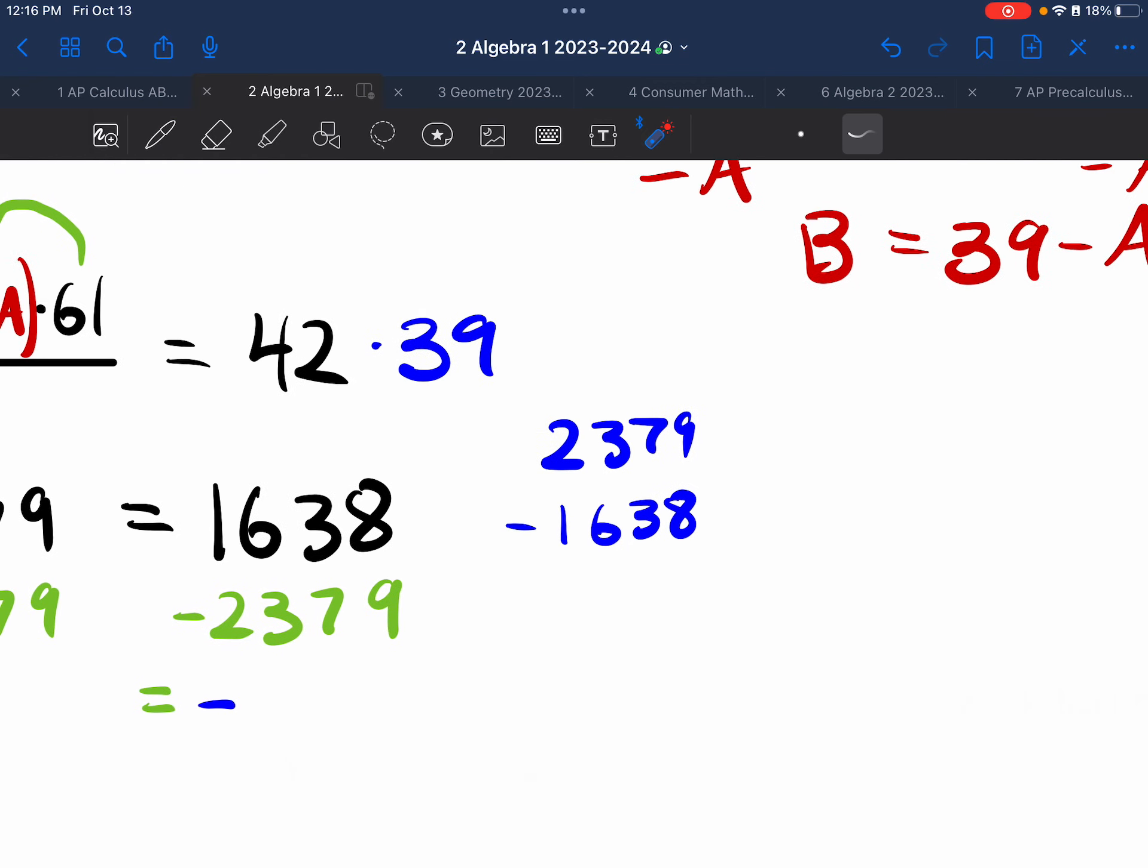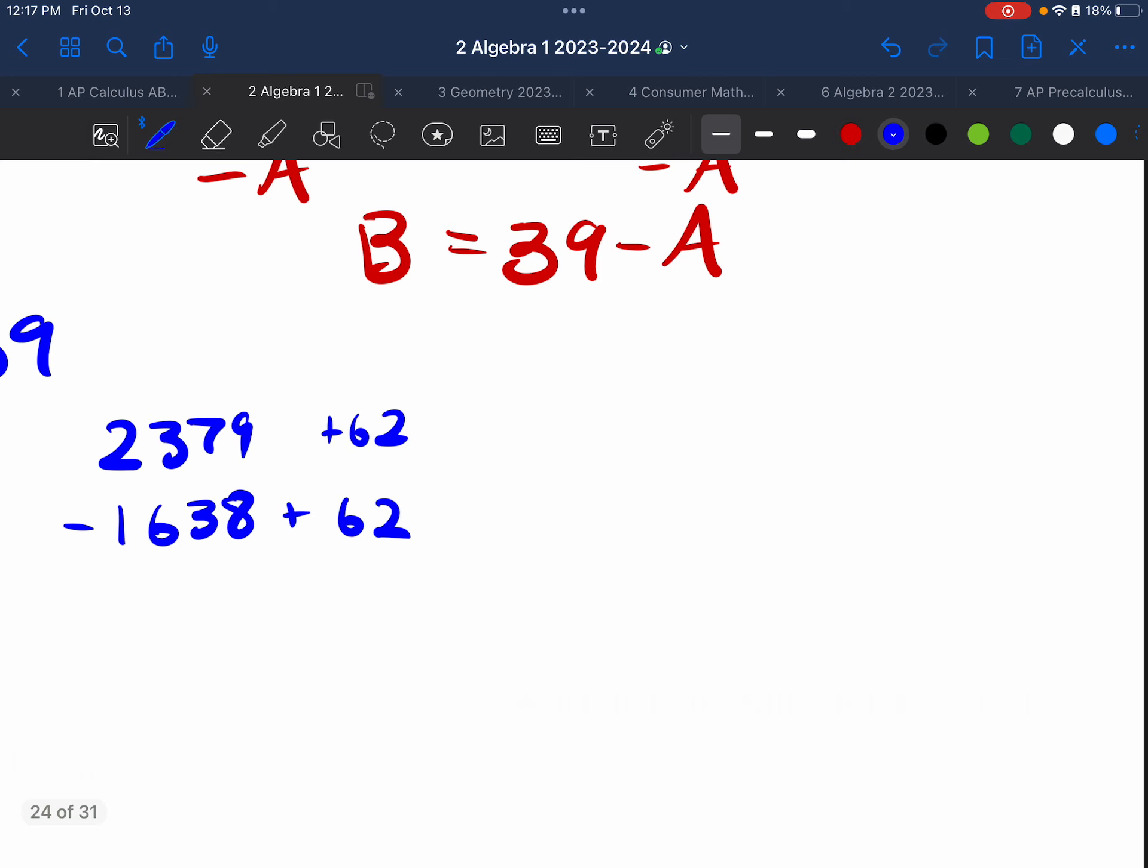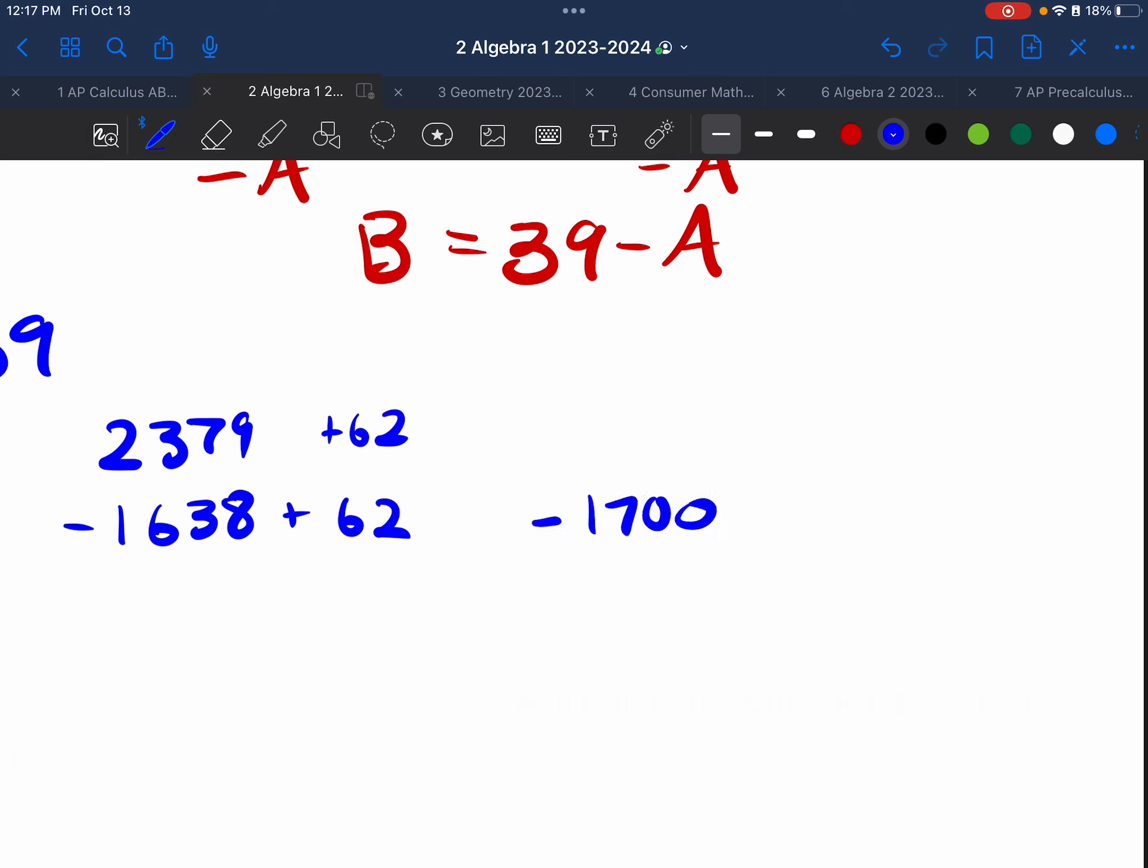And I just need to find the answer to this question, which is gross. Let me show you something that is better. If I do something like this, I can add 62, add 62. If I add 62, this now turns into a much nicer problem. It's going to be minus 1,700. And if I add 62 up here, I'm just going to turn this into a 24. Let's see. The 9 turns into a 1. Carry the 1. Hold it on my fingers. And I get a 14.